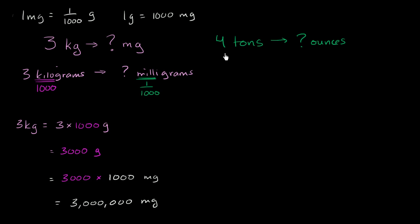Now let's do the same thing over here. Let's convert this U.S. customary ton right over here to ounces. And what we'll do first is we'll go to pounds, and then from pounds we can go to ounces. And we know that one ton is equal to 2,000 pounds.